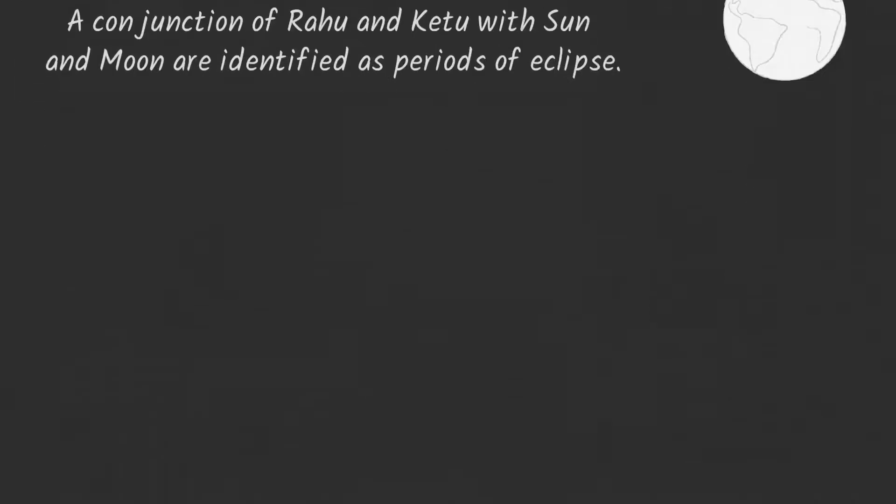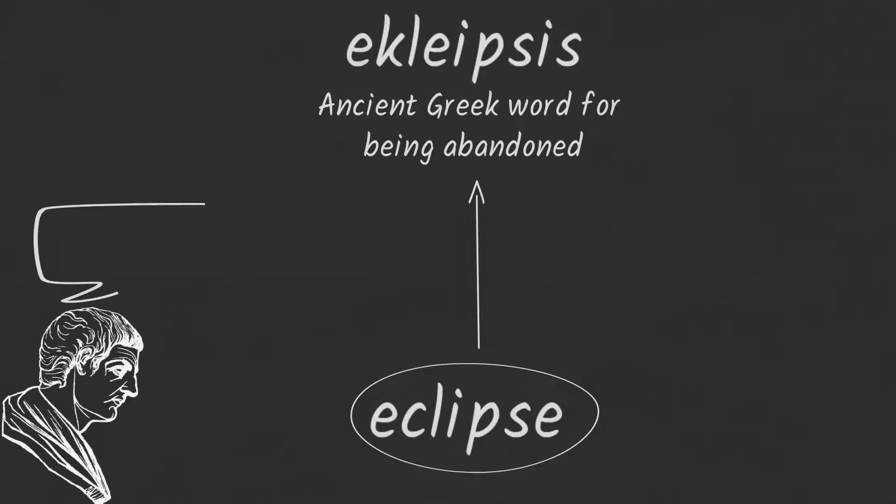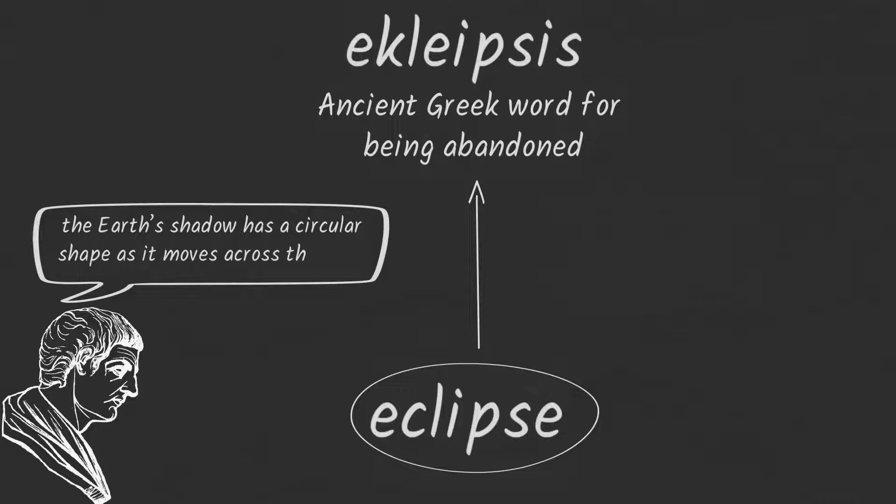The word eclipse comes from ekleipsis, the ancient Greek word for being abandoned. Aristotle observed that the earth's shadow has a circular shape as it moves across the moon.